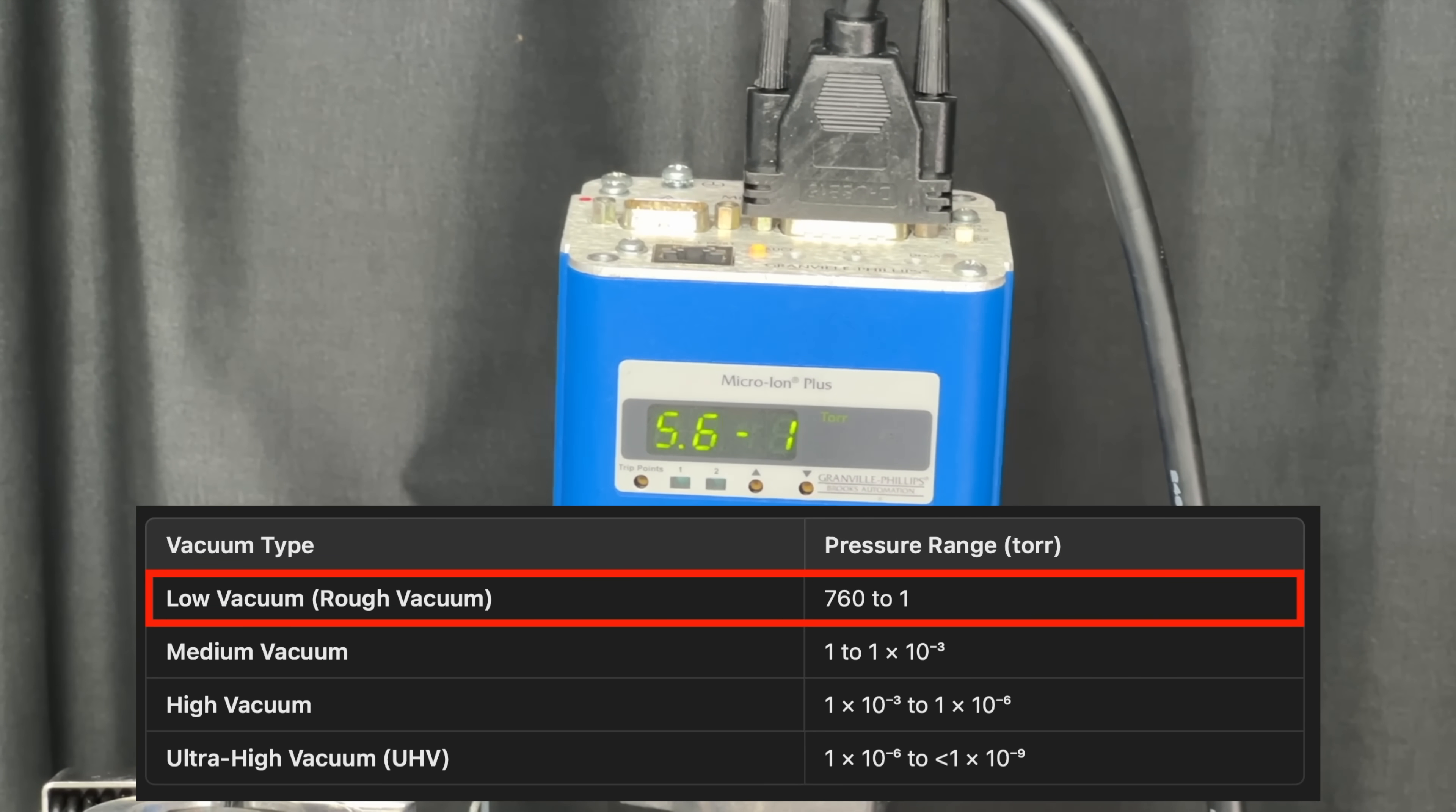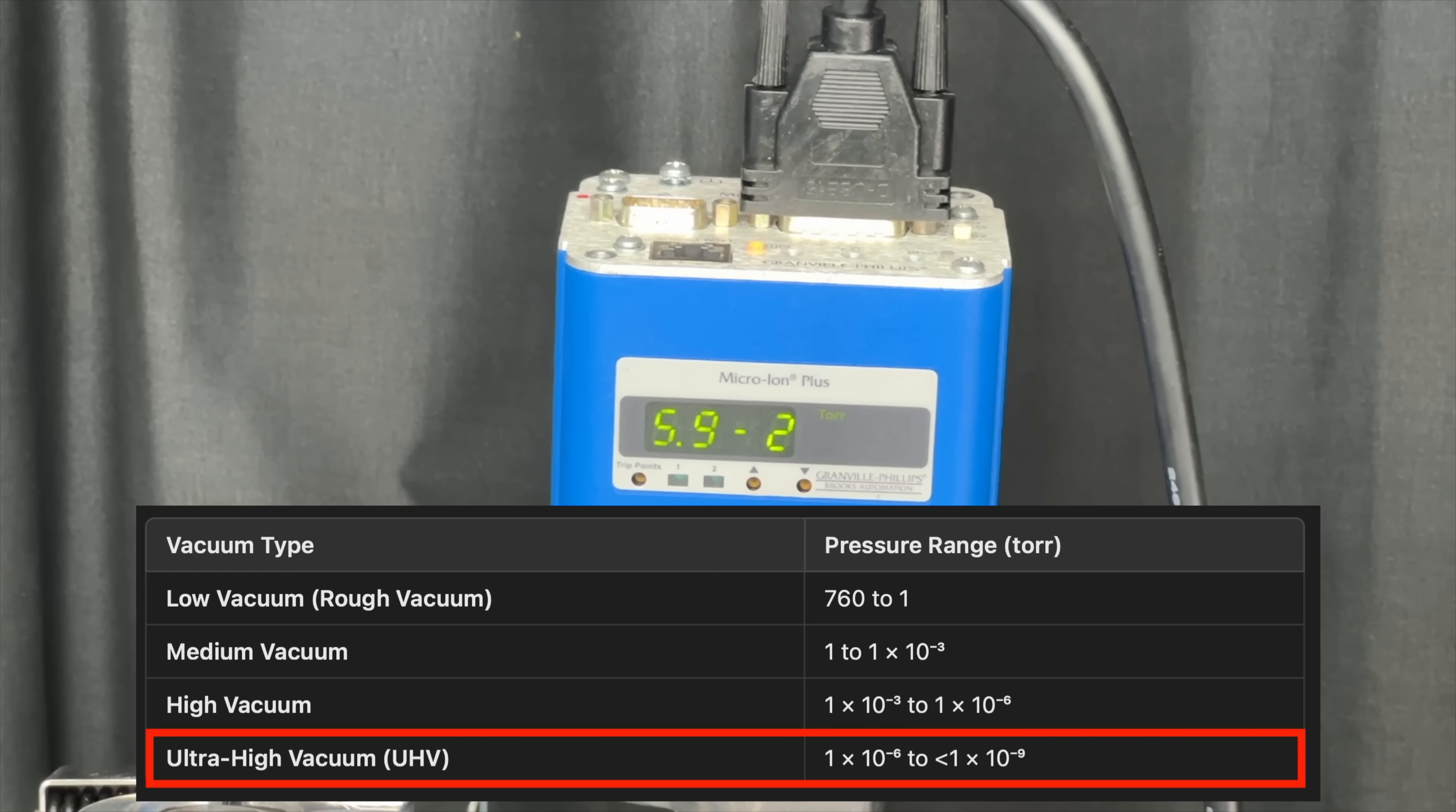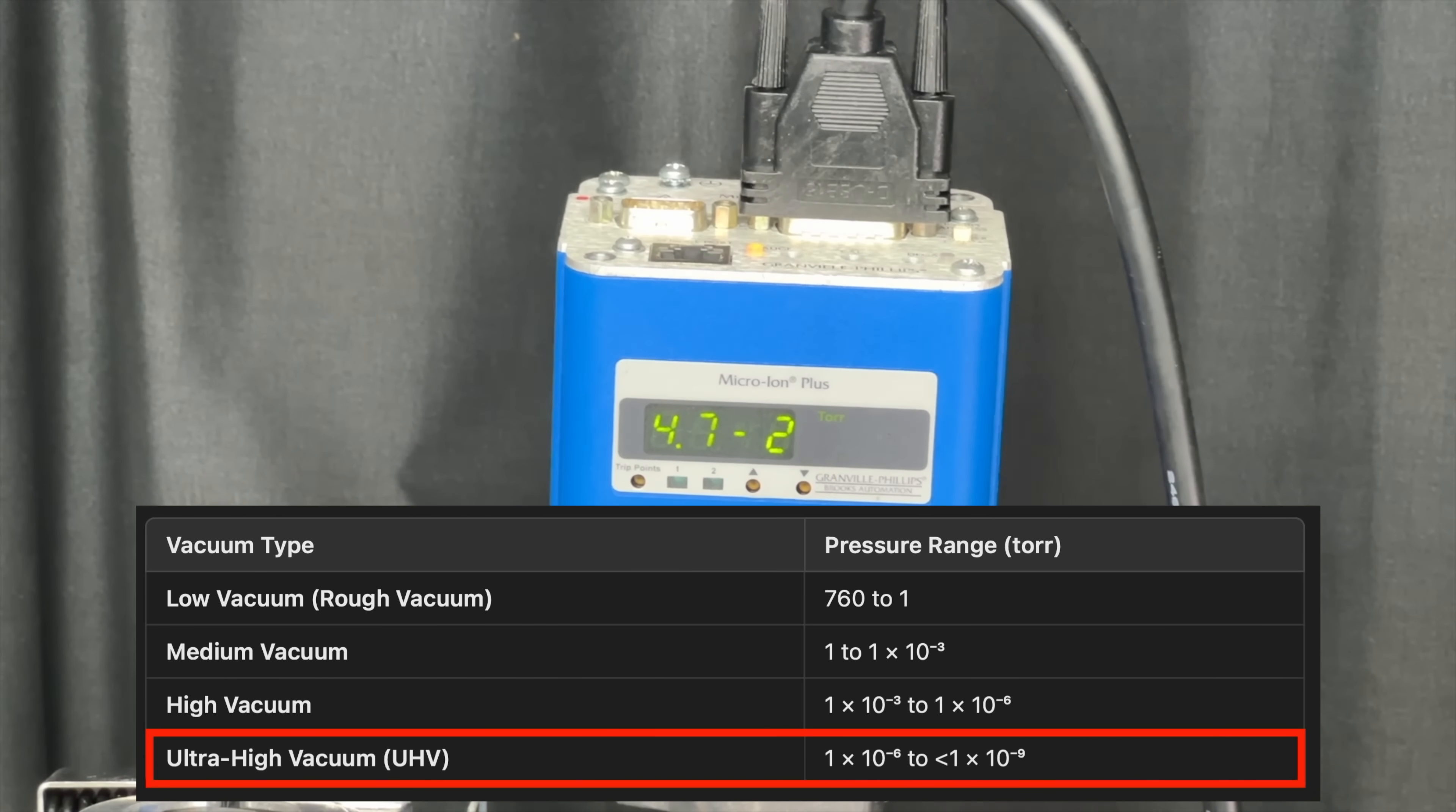At negative two, we're in the rough vacuum zone, which is generally where you would do your epoxy degassing and things like that. Beyond negative six, we're in the ultra high vacuum region, which is ideally what we want.